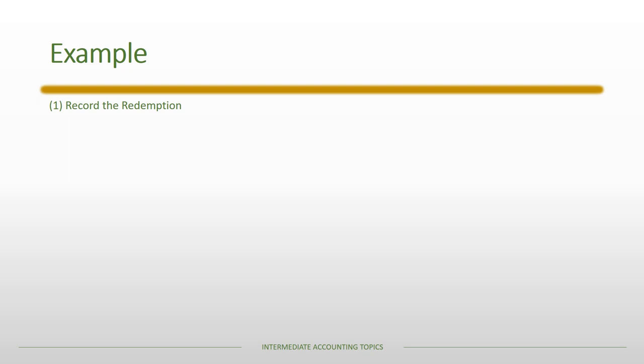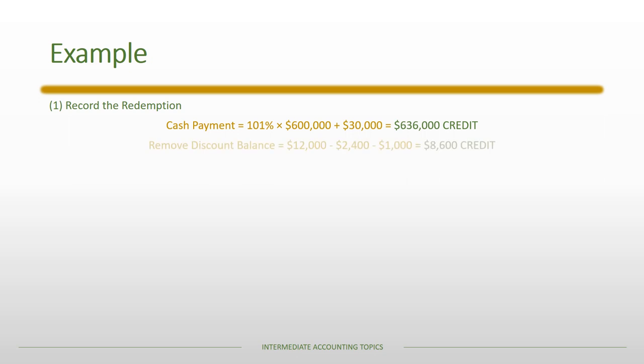Now we have to record the redemption. We record the total cash payment, which includes 101 percent of the par value plus the contractually accrued interest, totaling $636,000. We also have to remove any remaining discount balance. The original balance was $12,000; in 2018 and 2019 they amortized $1,200 each year, reducing it by $2,400, and the additional $1,000 amortization recorded on October 31st brings the remaining balance to an $8,600 debit, so we need an $8,600 credit to remove it.